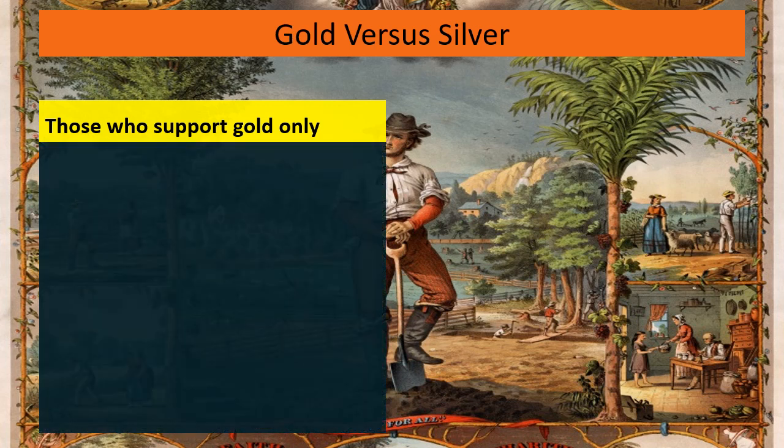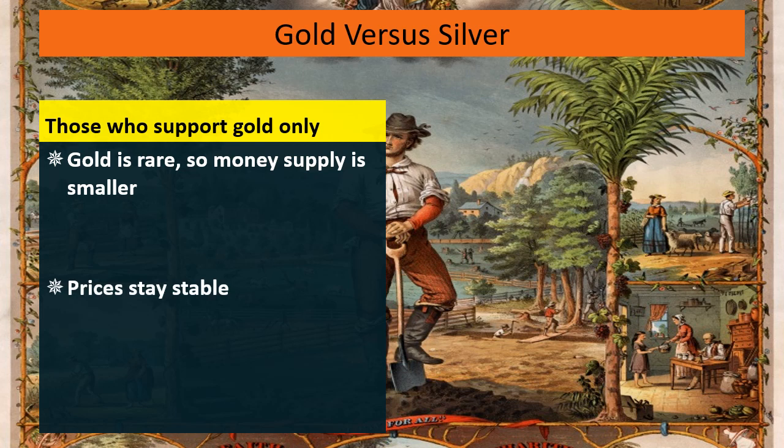Those who supported gold felt that a smaller money supply meant that prices and the value of money would be stable. So if you had $60 million in a gold-backed economy, it's pretty much going to stay $60 million, because the value of your money is going to be stable. The wealthy benefit from a very stable supply like this.